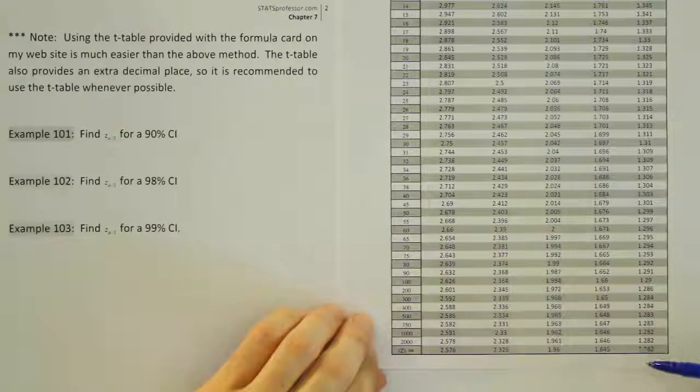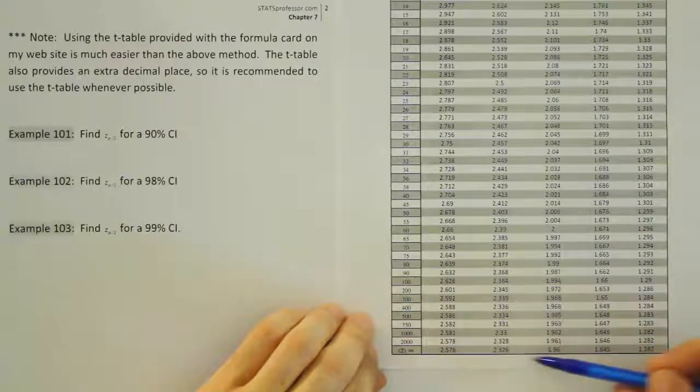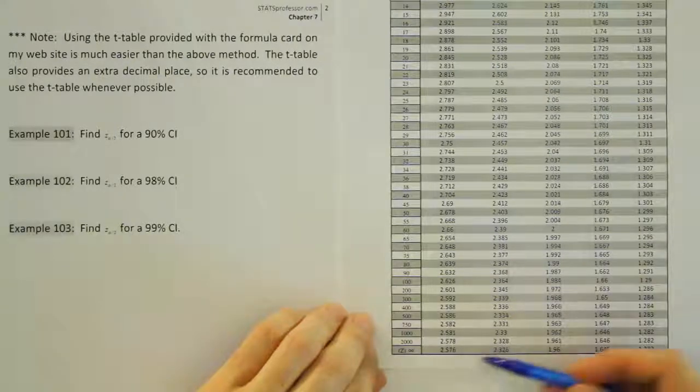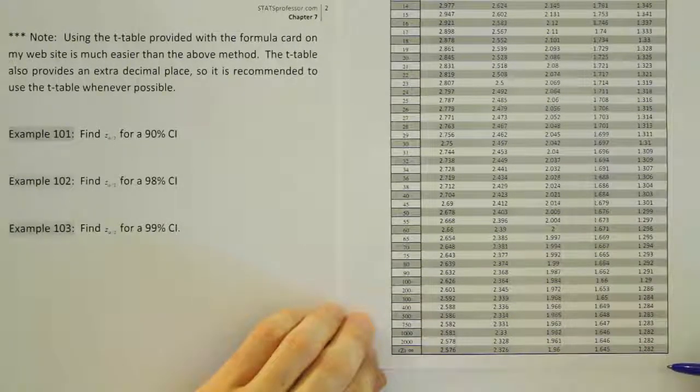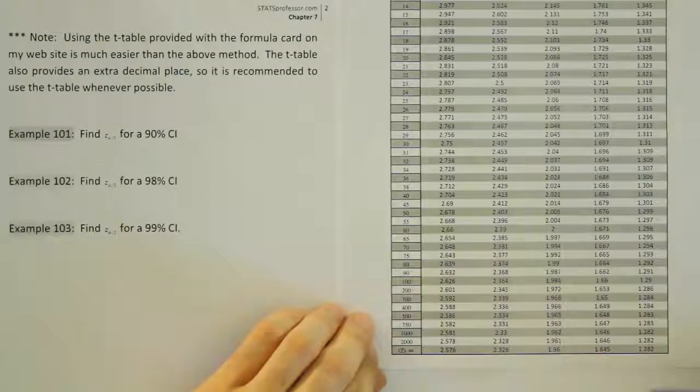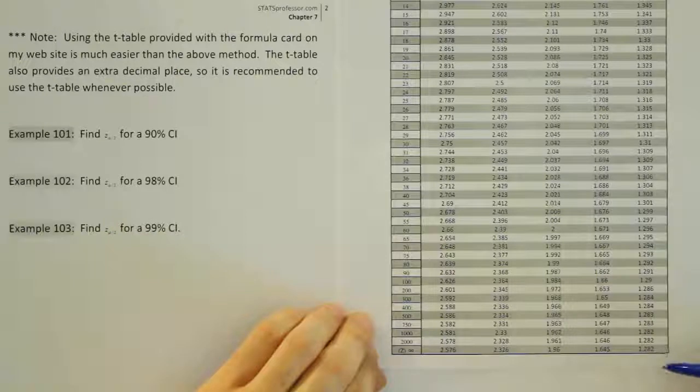That's because the t-distribution in its limit is the same as the z-distribution. So what we're going to do here is use this table and this bottom row of the table here to find these critical z-values. It turns out that this is the most simple way to do it. It has another benefit.